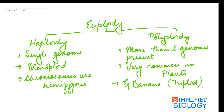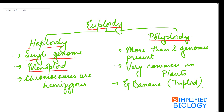Now moving to euploidy, which is of two types: haploidy and polyploidy. In haploidy, as the name suggests, instead of two genomes only a single genome is present. These organisms are also referred to as monoploids. Since the chromosomes do not have homologues, such chromosomes are described as hemizygous.